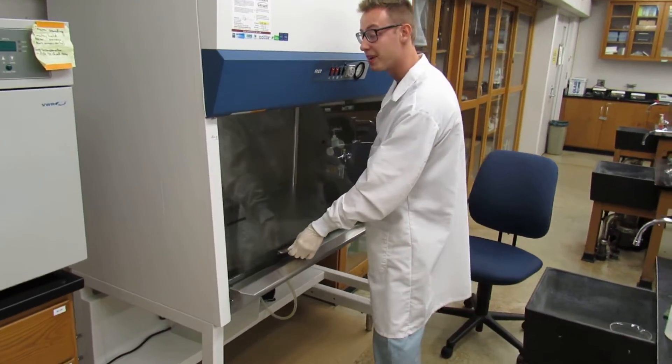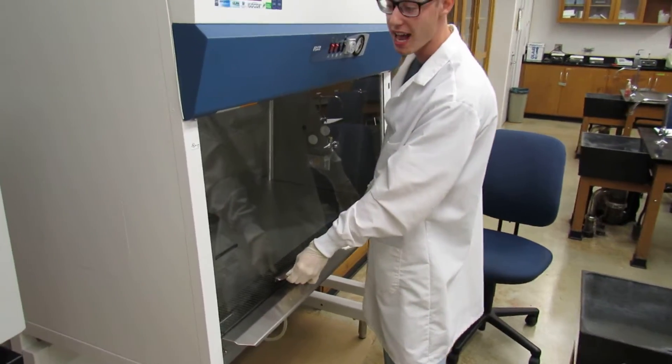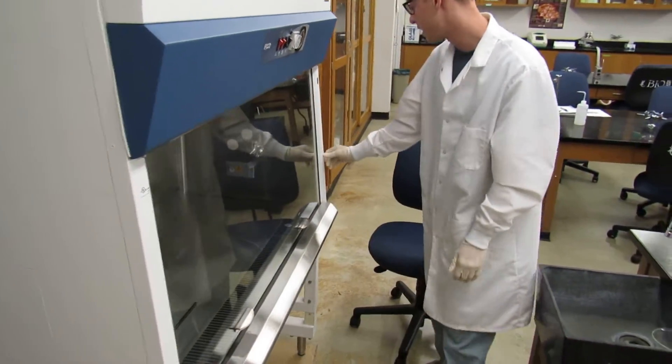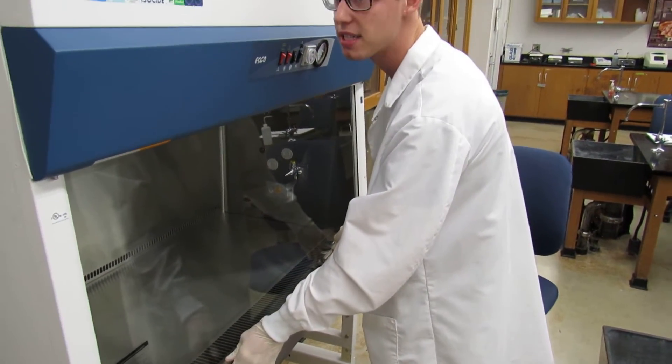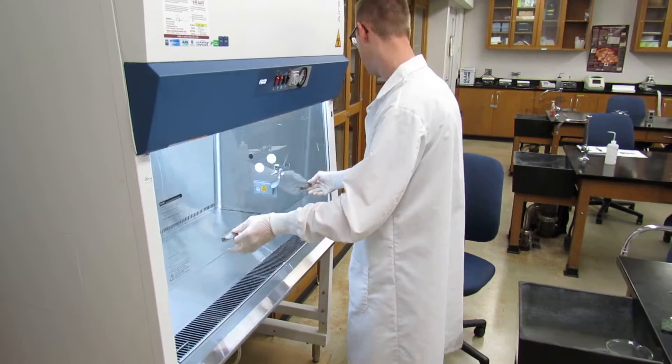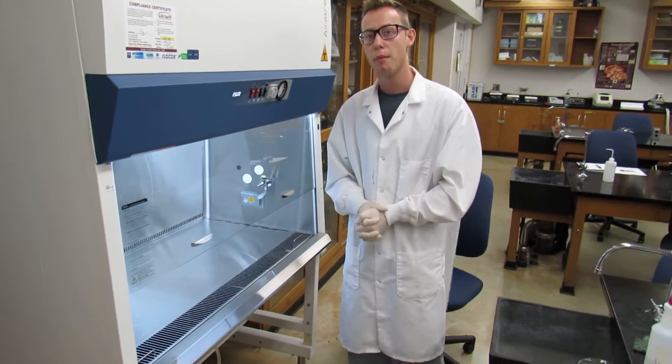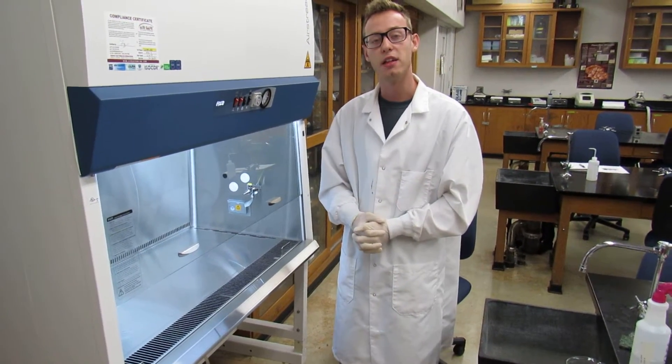The biosafety cabinet is this right here, and you're going to want to raise the sash until you get to this mark right here, the sash height line. You're going to raise it until the lights of the cabinet turn on. The cabinet will keep alarming until you've reached the proper height and the lights have turned on.